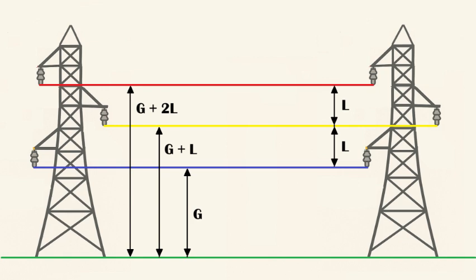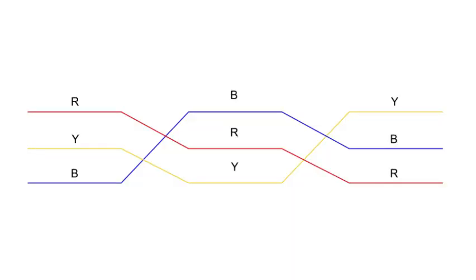This causes asymmetry in the inductance and capacitance of the lines, and that can lead to voltage imbalances, unequal line losses, and unwanted interference with communication lines. To tackle this, we use a technique called transposition.